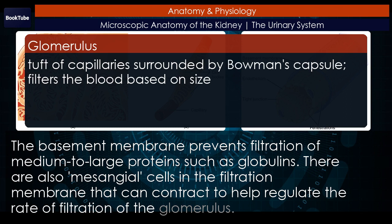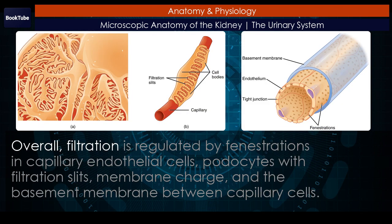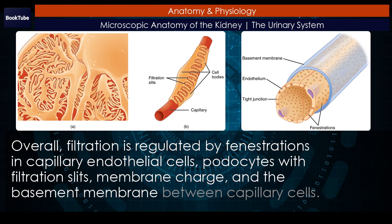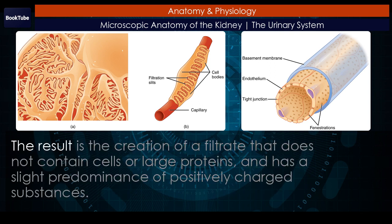There are also mesangial cells in the filtration membrane that can contract to help regulate the rate of filtration of the glomerulus. Overall, filtration is regulated by fenestrations in capillary endothelial cells, podocytes with filtration slits, membrane charge, and the basement membrane between capillary cells. The result is the creation of a filtrate that does not contain cells or large proteins, and has a slight predominance of positively charged substances.